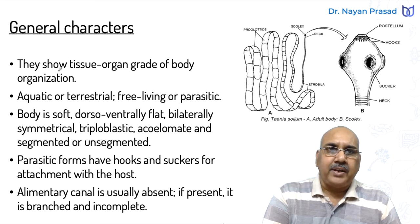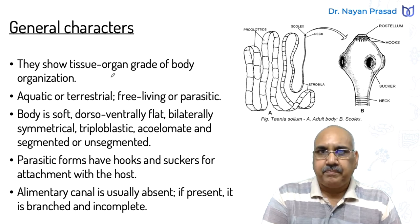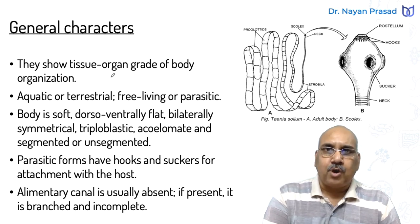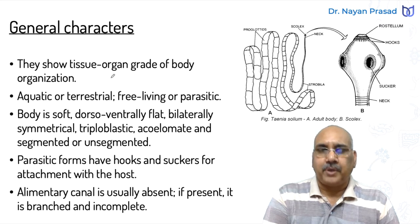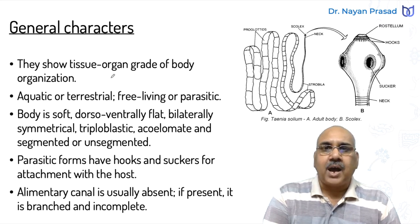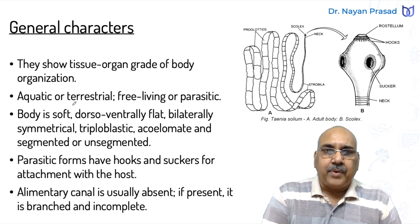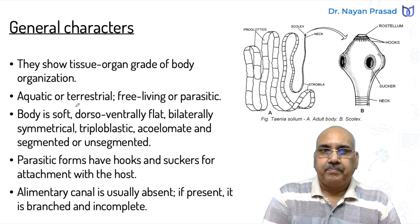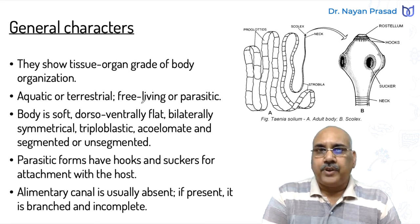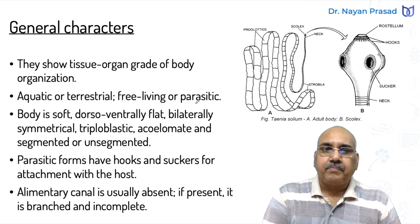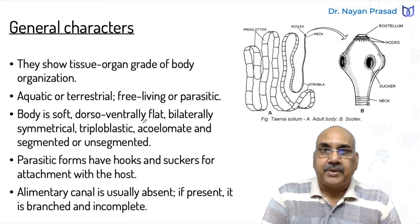The members of this phylum exhibit tissue organ-grade of body organization, meaning they have tissues and different organs to perform particular functions of the body; however, organ systems are still not developed. They may be aquatic or terrestrial — some live in water, some on land. Some members are free-living, some are parasitic. The body is soft and dorsal-ventrally flat.